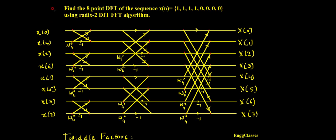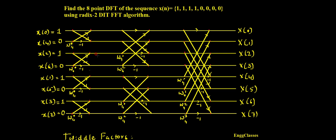Now let me insert the input. We must be very careful — we cannot write the input in the given order. x[0] = 1, x[4] = 0, x[2] = 1, x[6] = 0, x[1] = 1, x[5] = 0, x[3] = 1, and lastly x[7] = 0.